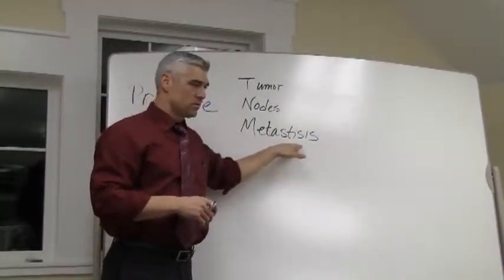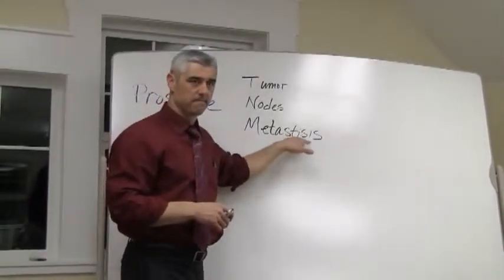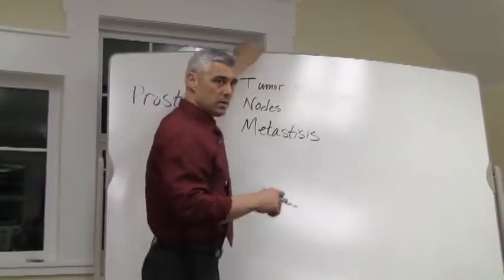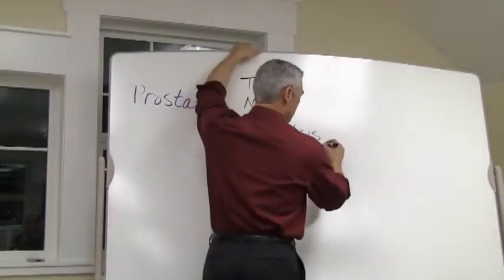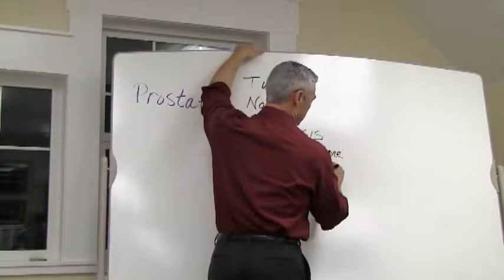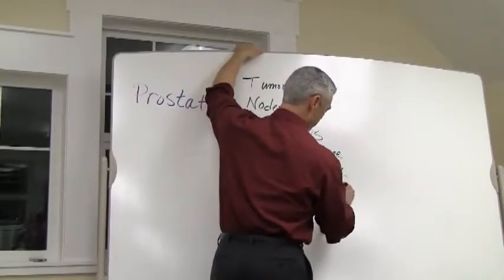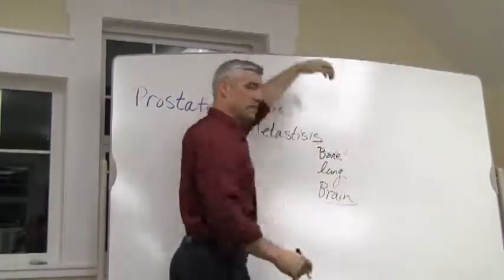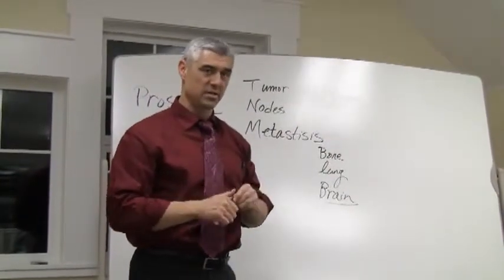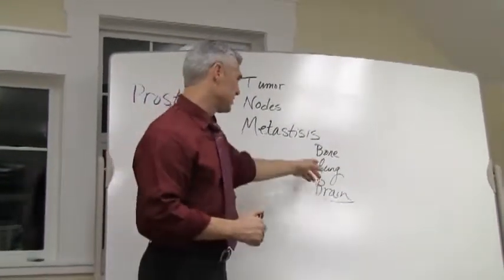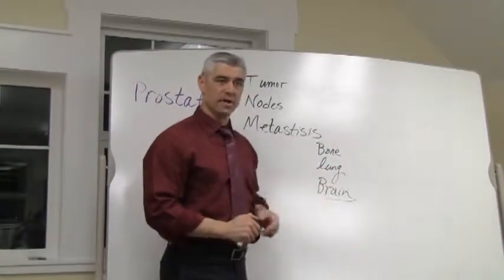Where does prostate cancer like to metastasize? It usually goes to bone, lung, and brain. Even though the bladder is next door, it isn't as commonly affected — the cancer more often travels to bone, lung, and brain.